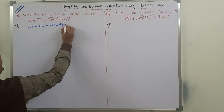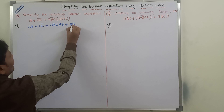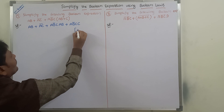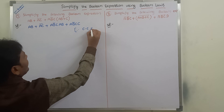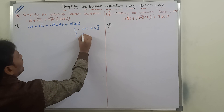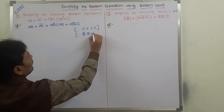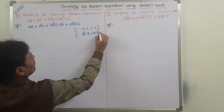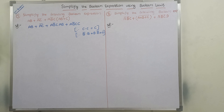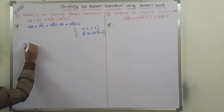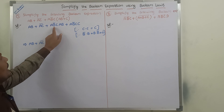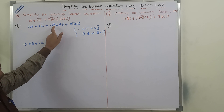Expanding: A·B̄·C·AB plus A·B̄·C·C. We already know that C·C is equal to C — this is one formula. Another formula is B̄·B equals B·B̄ equals zero. We apply these two formulas in this expression, giving us (AB + AC) whole bar, plus terms where B̄ and B appear together.